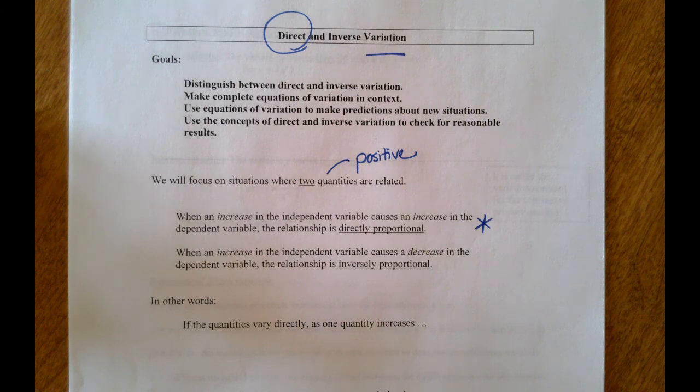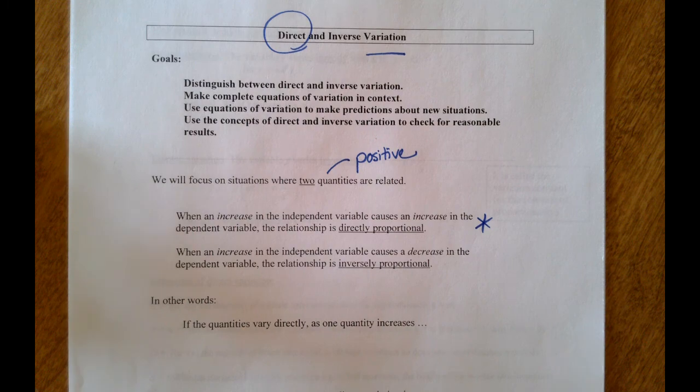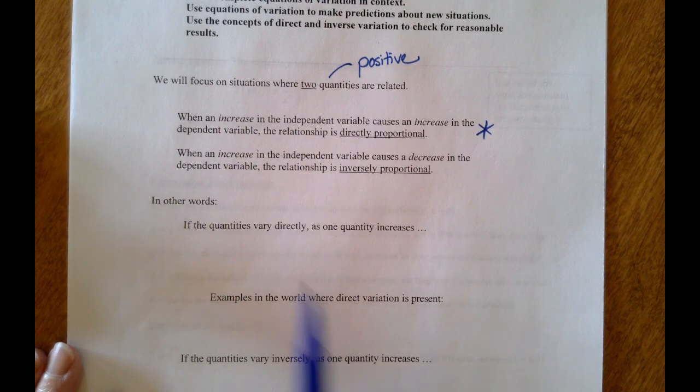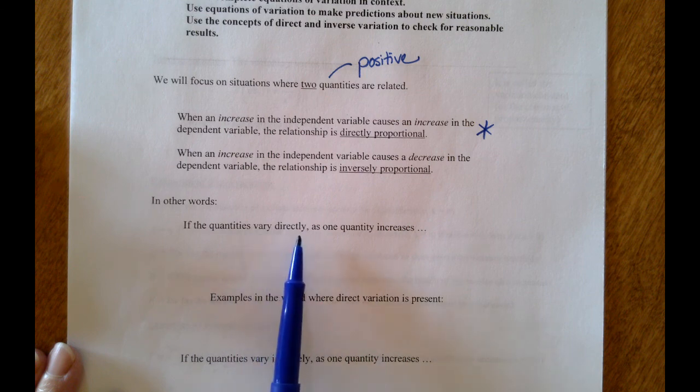By the end of this video, the plan would be that you can take a situation where you know you have direct variation and write the complete equation of variation, and then also use that equation to make some predictions.